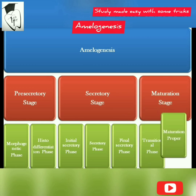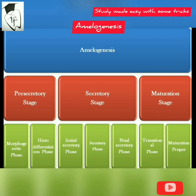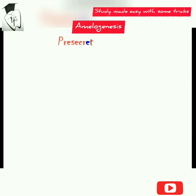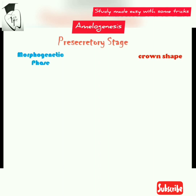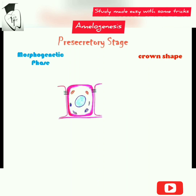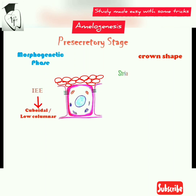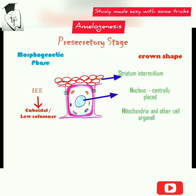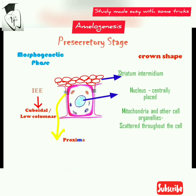In the morphogenetic phase of the pre-secretory stage, the inner enamel epithelium cells are arranged in a layer and assume the crown shape, becoming cuboidal or short columnar cells. The part facing the stratum intermedium is the proximal portion, and the part toward the basement membrane is the distal portion. The nucleus is centrally placed, mitochondria and other organelles are scattered throughout the cell, and the proximal part contains a proximal junctional complex.